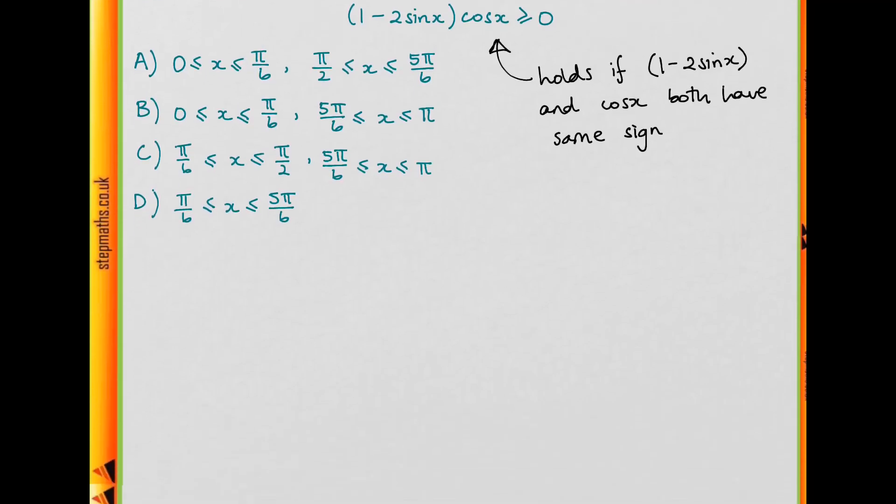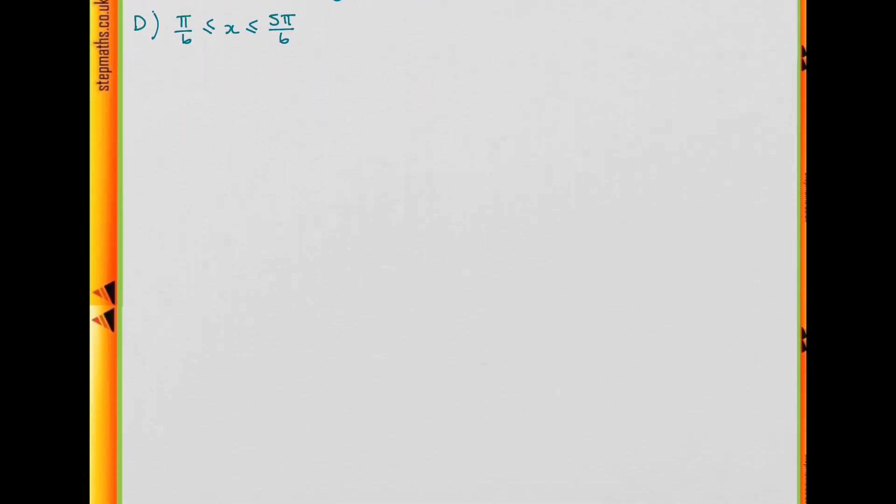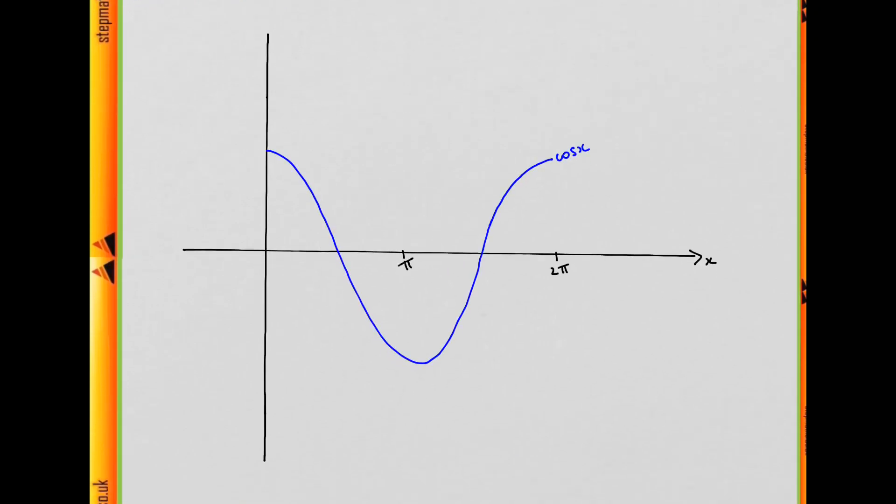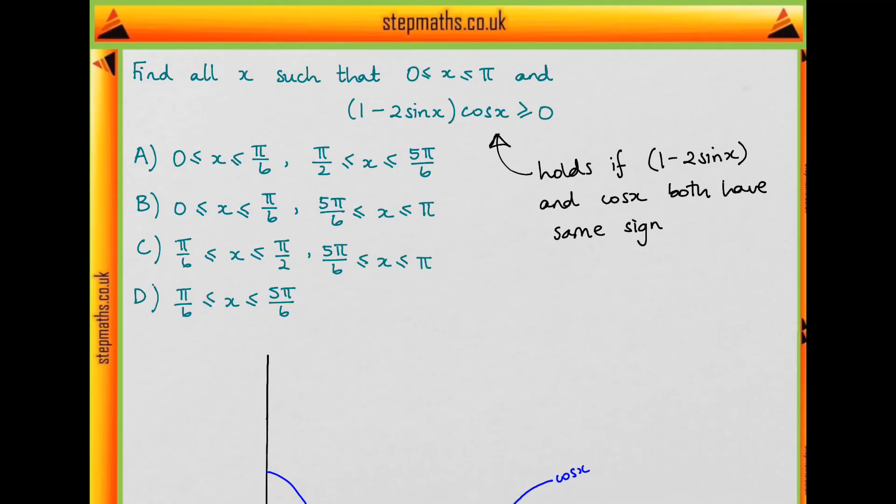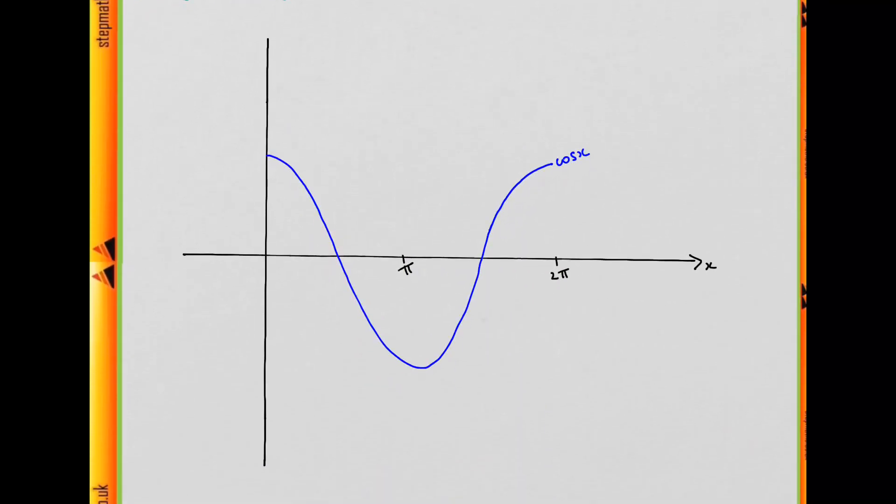So if we think about what their graphs look like, cos x is easy, we know what that looks like. Now for 1 - 2sin x, let's begin with sin x.